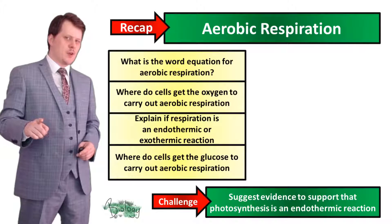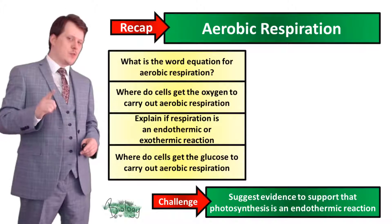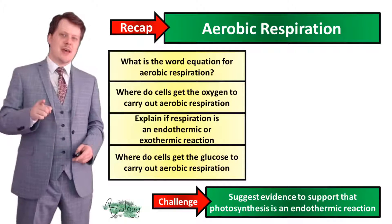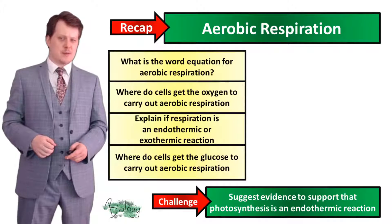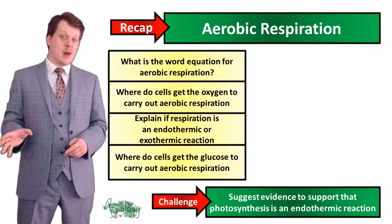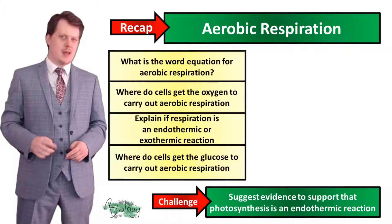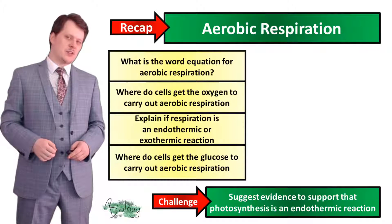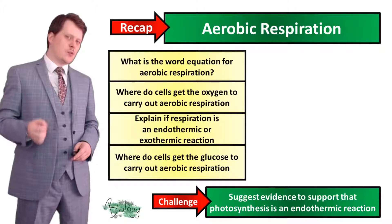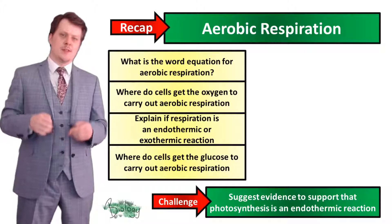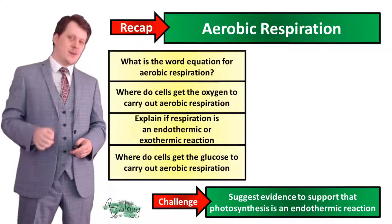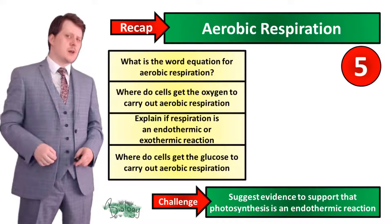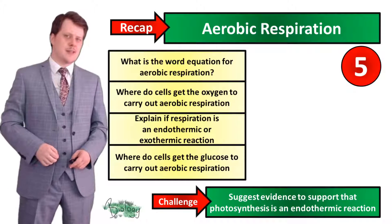Let's have a recap. The four questions are: the word equation for aerobic respiration; where do cells get their oxygen to carry out aerobic respiration; is respiration an endothermic or exothermic reaction; and where do cells get the glucose for aerobic respiration? And as a challenge: suggest evidence to support that photosynthesis is an endothermic reaction. Pause the video if you need more time.